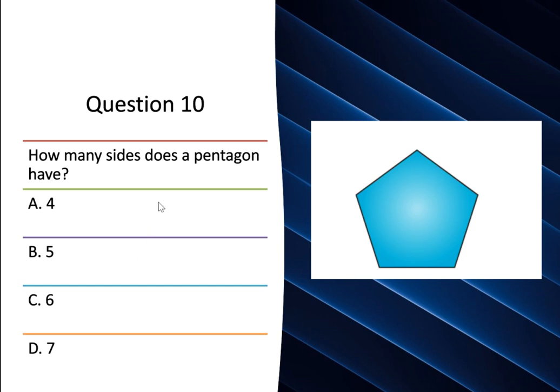Question number 10. How many sides does a pentagon have? Option A, 4. Option B, 5. Option C, 6. And option D, 7.